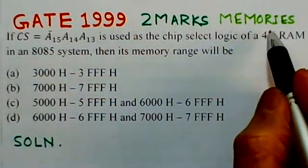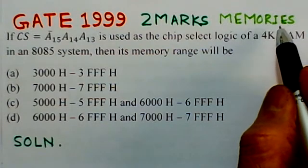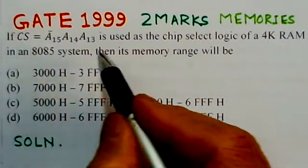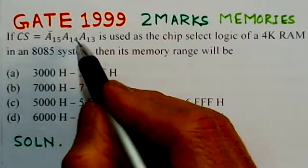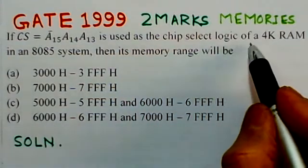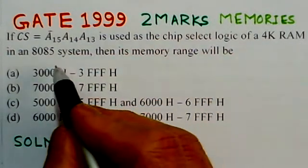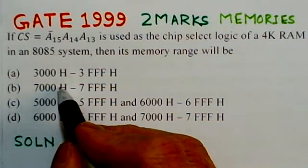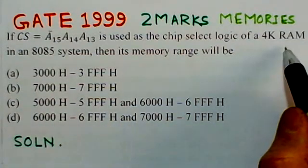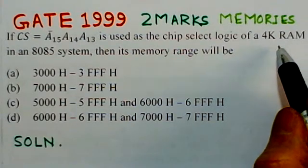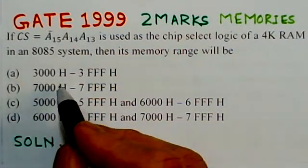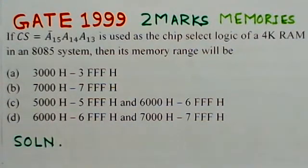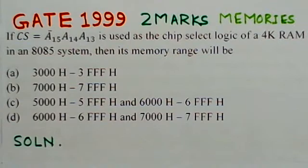The problem states that if CS equals A15 bar, A14, A13 is used as the chip select logic of a 4K RAM in an 8085 system, then its memory range will be. There are four options given, and you have to find out which is the correct memory address range for this 4K RAM interfaced to the 8085 microprocessor.